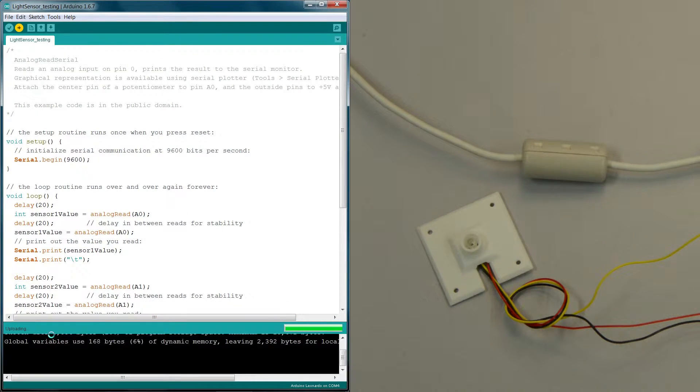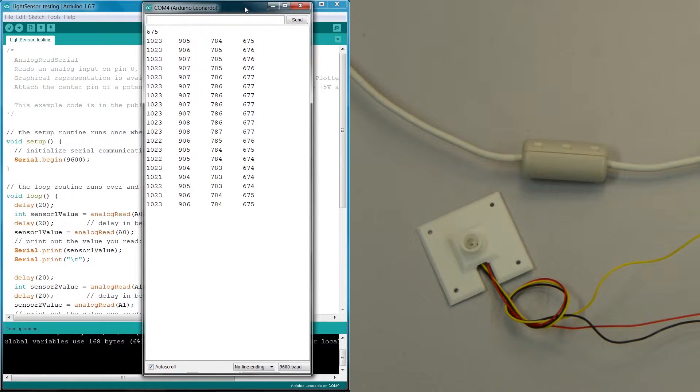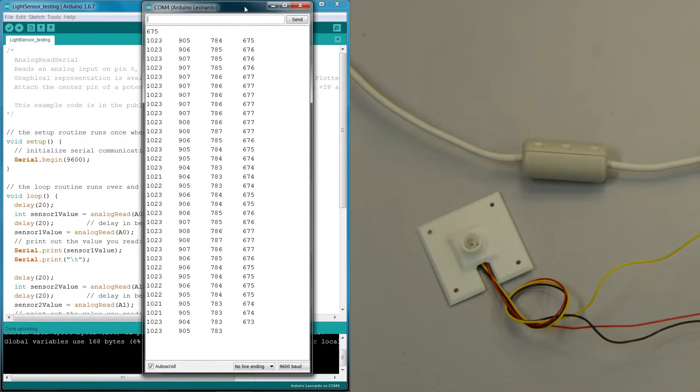The microcontroller flashes a blue LED while the code is being uploaded. Once it has finished, open the serial monitor using the magnifying glass button in the top right corner and read the sensor data.